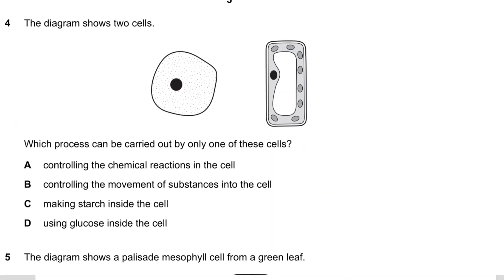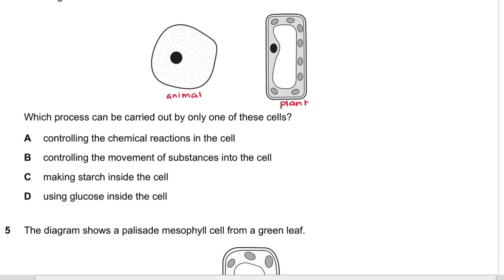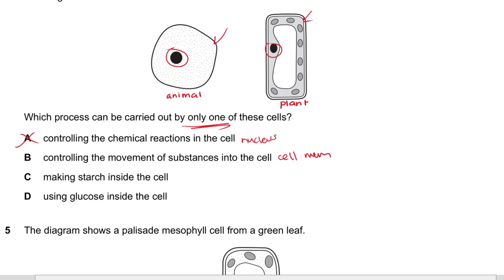Question 4: The diagram shows an animal cell and a plant cell. Which process can be carried out by only one of these cells? Controlling chemical reactions is done by the nucleus, which is in both — not A. Controlling movement of substances into the cell is the cell membrane, which is in both — not B.